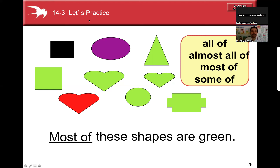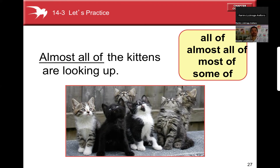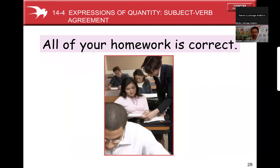Let's practice. OK, the kittens are looking up — how many kittens are looking up? One, two, three, four, five are looking up. Only this one is not looking up. So which expression are you going to use here? Tessly says almost all of — yes! Read the whole sentence: 'Almost all of the kittens are looking up.' Very good!